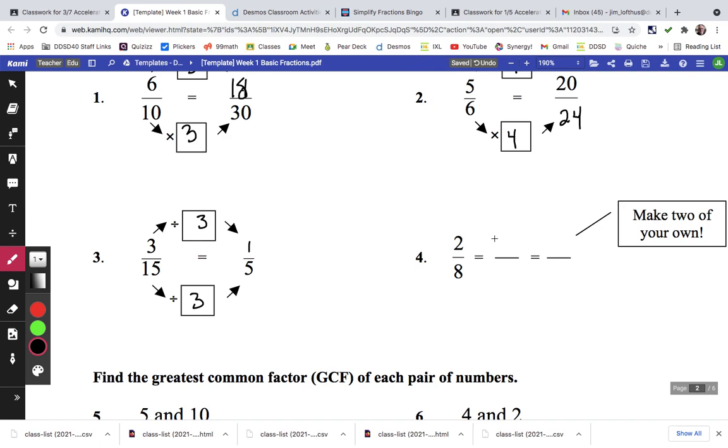And then this says just to make your own equivalent fractions, we could do it times 2. 2 times 2 is 16, and then times 3 is 24.